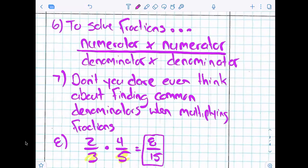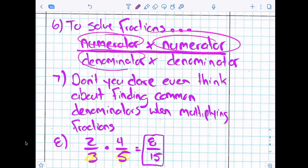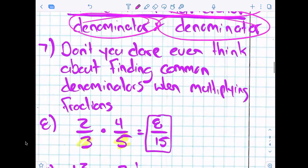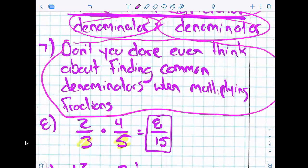All right, when we're solving fractions, we multiply the what by the what first? The numerator. And then you multiply the what by the what second? And it says right here on the count of three, we're going to read number seven. One, two, three. Don't you dare even think about finding common denominators when multiplying fractions.